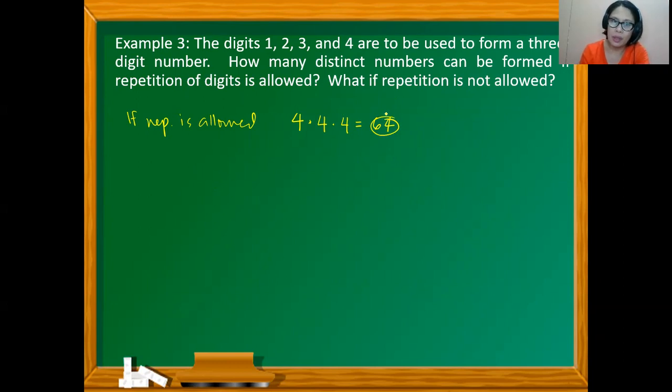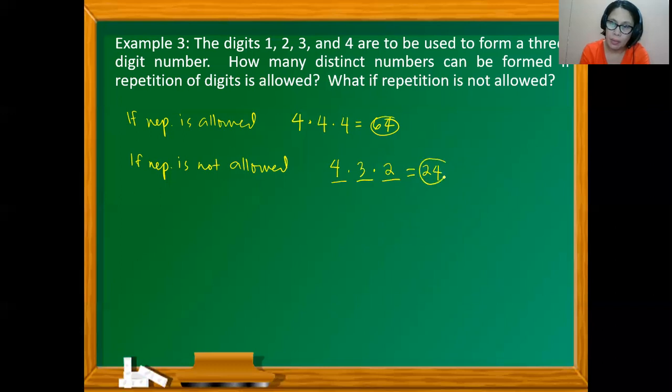In case that repetition is not allowed, so if repetition is not allowed, there are four possible choices for the hundreds digit. Since repetition is not allowed, we only have three choices for the tens digit. Similarly, we'll only have two choices for the units digit. So working on the product of the three gives us 24 ways of selecting three-digit numbers if repetition is not allowed.